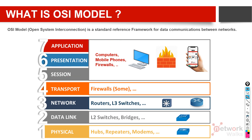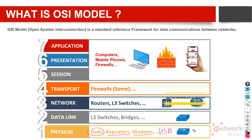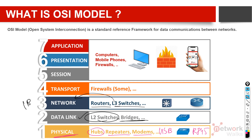Each layer has some equipment associated with it. Physical cables, hubs, repeaters, modems, USB standards, and RJ45 connectors all belong to the Physical layer. Layer 2 switches and bridges belong to the Data Link layer — a bridge is the old name for a basic Layer 2 switch, usually with two or three ports. Routers and Layer 3 switches belong to the Network layer.